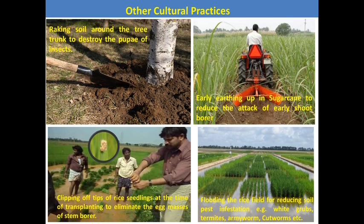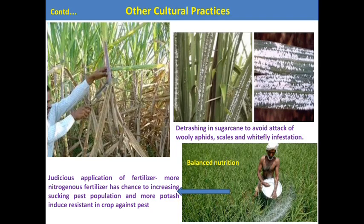Flooding: forcefully applying or stagnating water in the field creates anaerobic conditions for soil pests and kills or reduces them. Soil pests reduced by flooding include white grub, termites, armyworm, and cutworms. Detrashing: this technique is mainly followed in sugarcane to reduce the infestation of sucking pests like sugarcane oleaphid, scales, and whitefly.